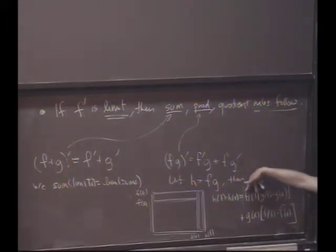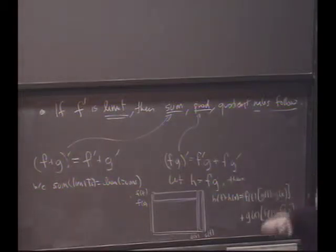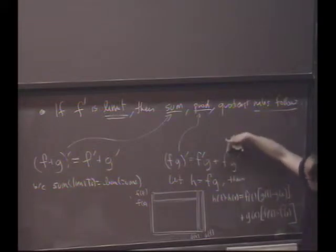What happens to the limit of f of x as t goes to x? It goes to f of x, because f is continuous, because it's differentiable. That gives this, that's that f, right?